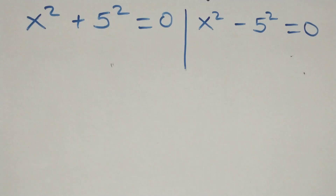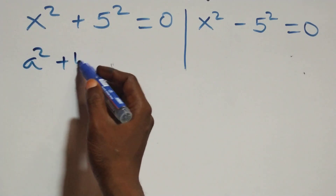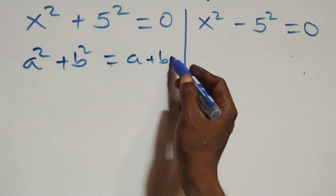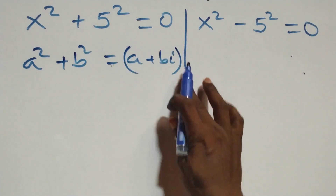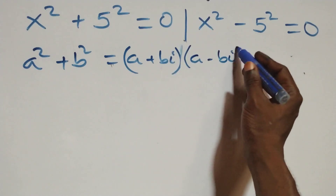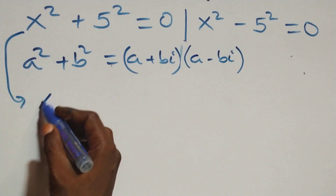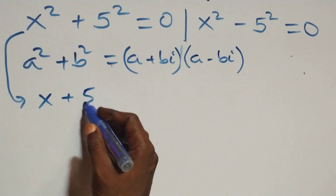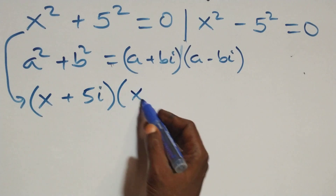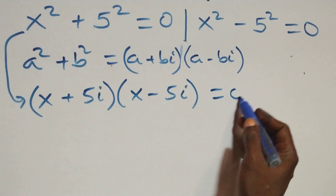Solving on this side: x squared plus 5 squared equals 0. This follows the identity a squared plus b squared, which is the same thing as (a plus b) into brackets, open brackets (a minus b). So it becomes: (x plus 5i) into brackets, then open brackets (x minus 5i), equals to 0.